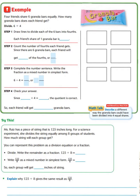Let's take a look at another example. The word problem says: 4 friends share 6 granola bars equally. How many granola bars does each friend get? We set up our division problem as 6 divided by 4. Let's break it down step by step.